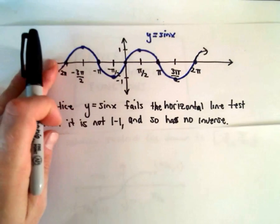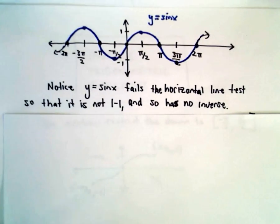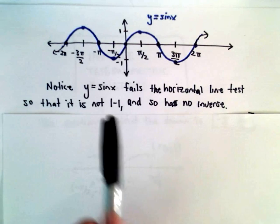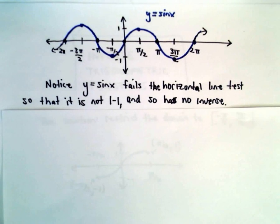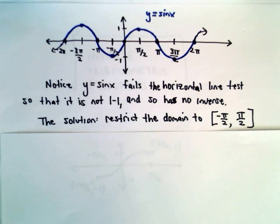Well, clearly, y equals sine x fails the horizontal line test. I mean, think about the x-axis. That's going to hit the graph in infinitely many places, which means it's not one to one, which means it has no inverse. So, the common technique in these cases is we just simply restrict the domain. And depending on what trig function you're working with, it'll have different restrictions. But for sine x, we're going to restrict the domain to negative pi over 2 to positive pi over 2.